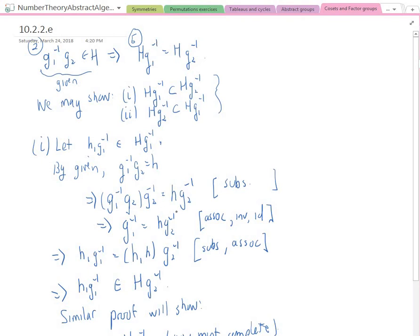All right, so then remember, I'm trying to show that this element here is also in HG2 inverse. But now, since I have a way of expressing G1 inverse in terms of G2 inverse, I can go ahead and plug that in. Again, H1 G1 inverse is equal to H1 times HG2 inverse. All right, so I used associative along with substitution. But H1 H is an element of big H. So that tells me H1 G1 inverse is an element of HG2 inverse. Okay, so that gives me what I need. That gives me, so this completes the proof of one.